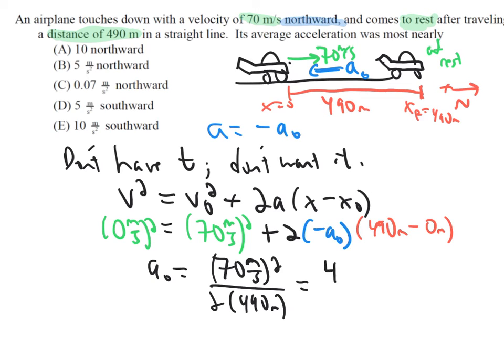You could do something like calculator, right? But you can also see 70 meters per second quantity squared is 4,900 meters squared per second squared, and this is 2 times 490 meters.